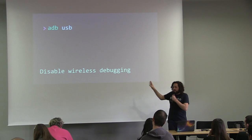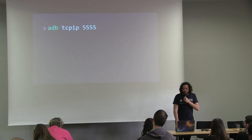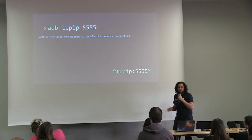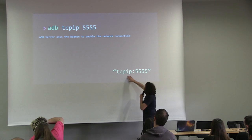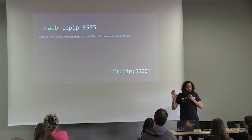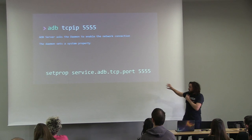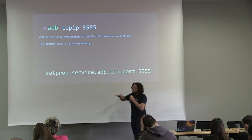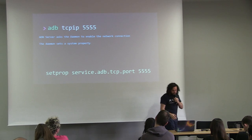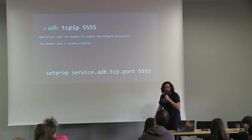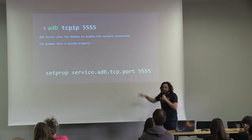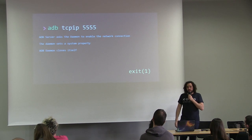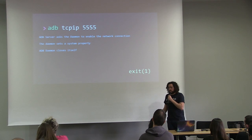Let's go deeper into the `adb tcpip` command. When you type this command, the ADB server asks the daemon to enable the network connection. It sends a payload like `tcpip:5555`. The daemon then sets a system property — `service.adb.tcp.port` — to that port number. You can do the same using `setprop` in a shell. Then the ADB daemon closes itself — it suicides. So there's no ADB running on the device anymore.